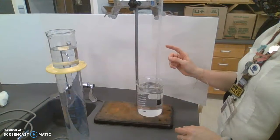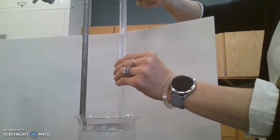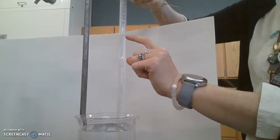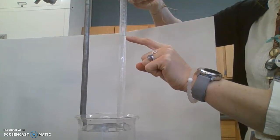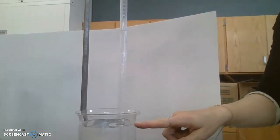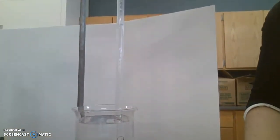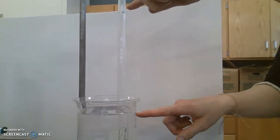And what we see here is our water level inside the eudiometer is about here, but the water level over here in my 600 milliliter beaker is all the way down here. So there's a great difference between these.